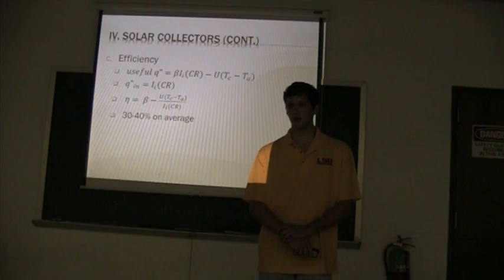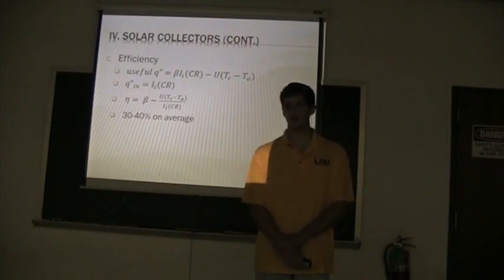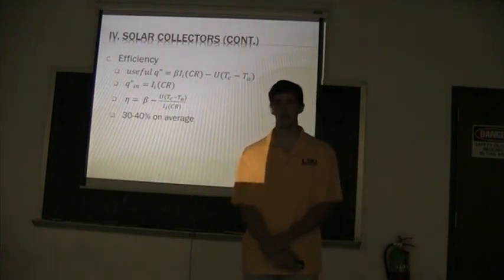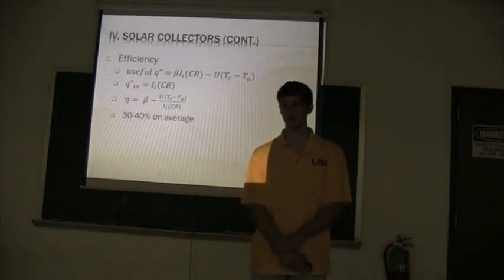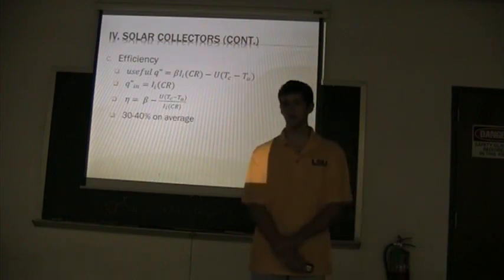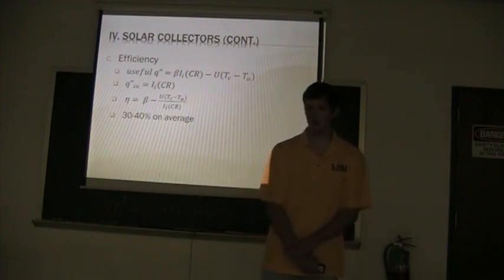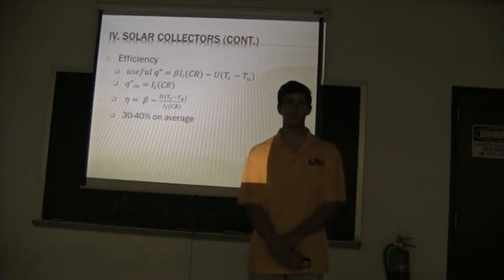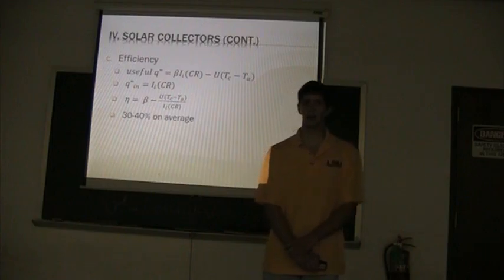So the useful energy is the total heat absorbed minus the heat lost due to convection. The heat in is simply the incident radiation times the concentration ratio. So from that you can see how we derive the efficiency formula. And the efficiency of solar collectors typically will be in the range of about 30 to 40 percent depending on the type and the weather conditions.